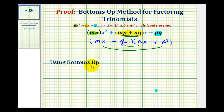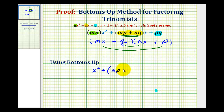To factor a trinomial using the bottoms-up method when a is not equal to one, we're going to write this so that a is equal to one. We replace the leading coefficient with one, and then replace the constant term c with a times c — in this case, mnpq. That gives us x squared plus the quantity mp plus nq times x, plus mnpq.